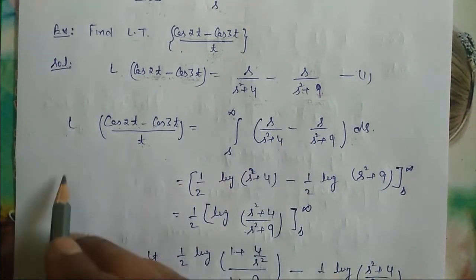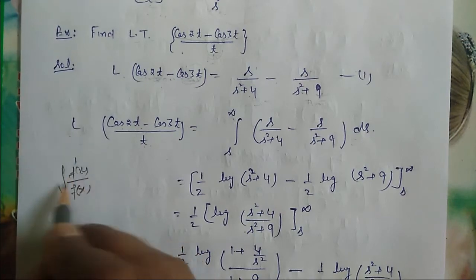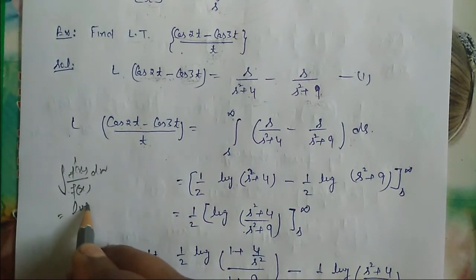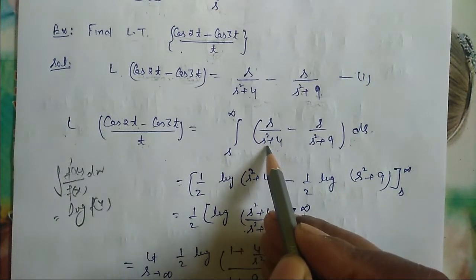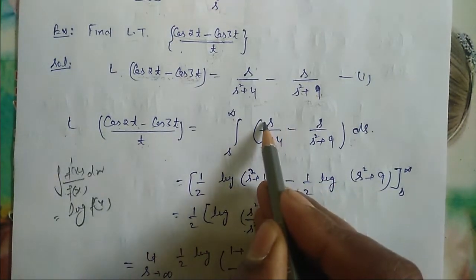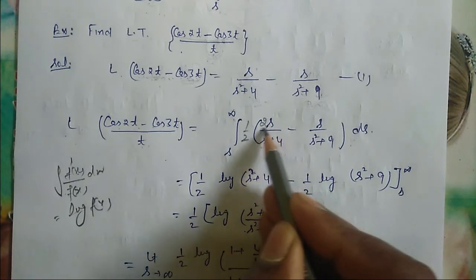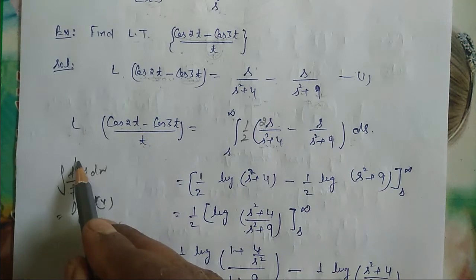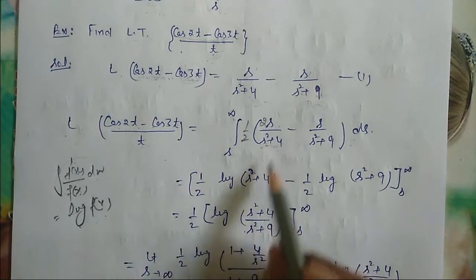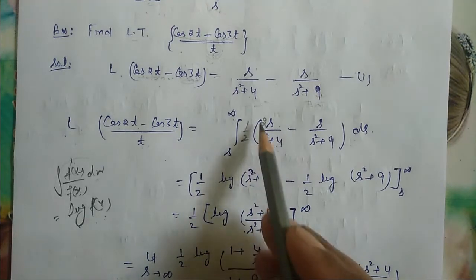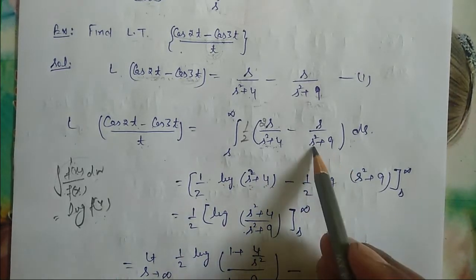Let us carry out the integration. According to the rule, if we have f′(x)/f(x), the integral is log of f(x). So here, the derivative of s²+4 is 2s, giving us (1/2) log(s²+4). Similarly, the integral of s/(s²+9) gives (1/2) log(s²+9). So we get (1/2)log(s²+4) − (1/2)log(s²+9), evaluated with the limit s to infinity.